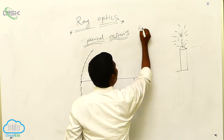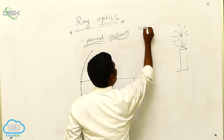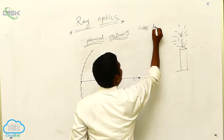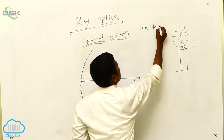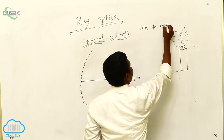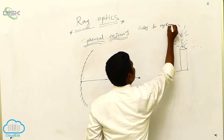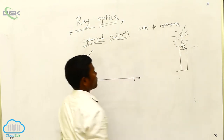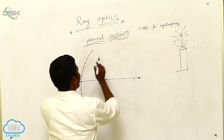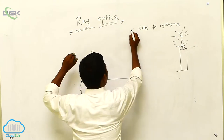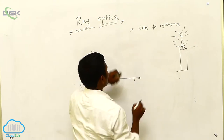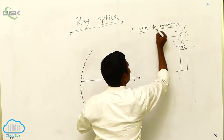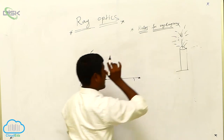Rules for ray diagrams. What are the rules for ray diagrams?